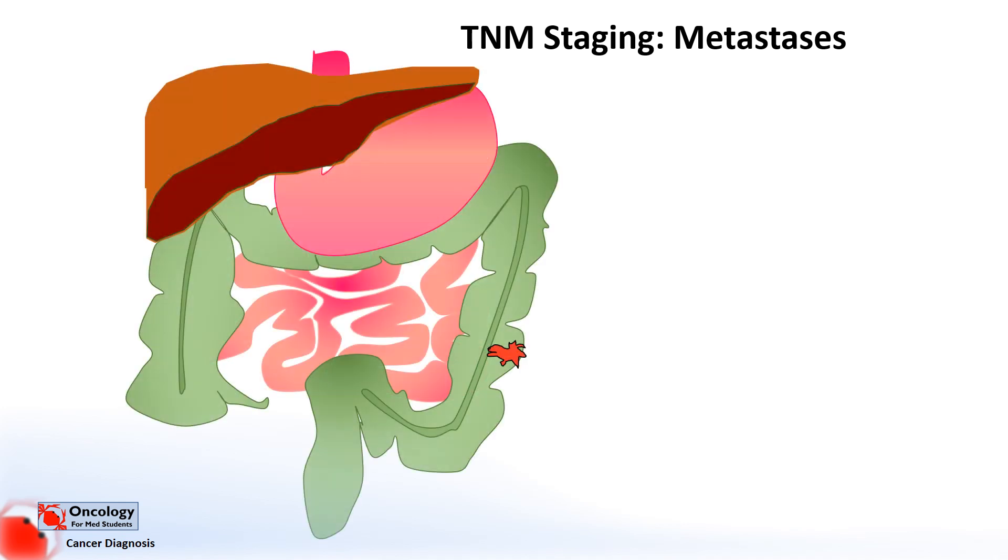Finally, the M, which stands for metastases. Quite simply, if there are no distant metastases, we label the cancer an M0. If there are distant metastases, as we can see up here in the liver, it is an M1.